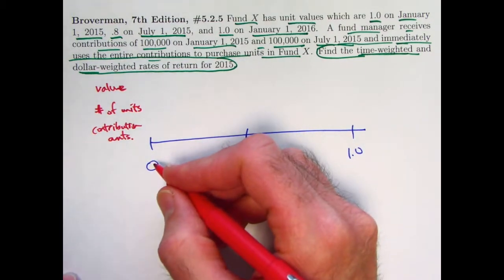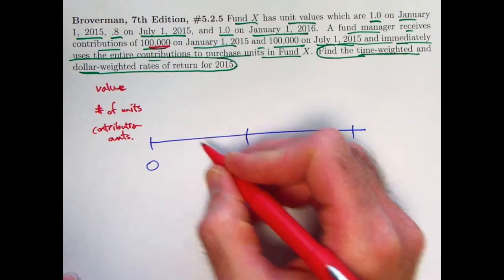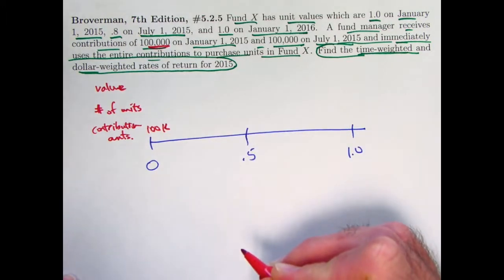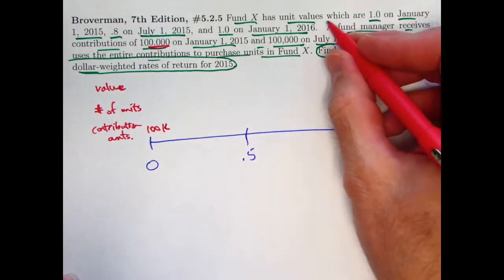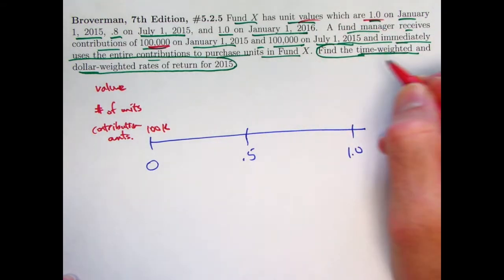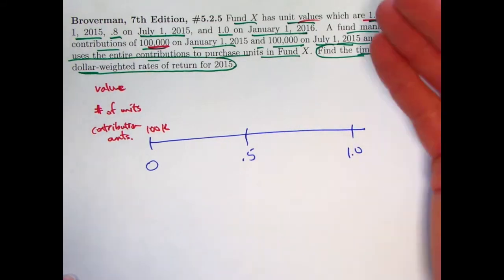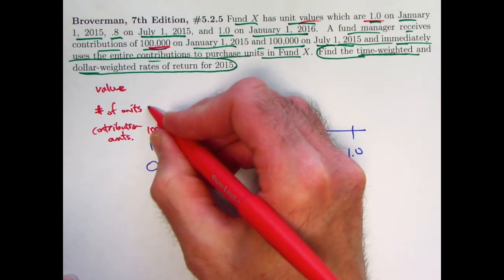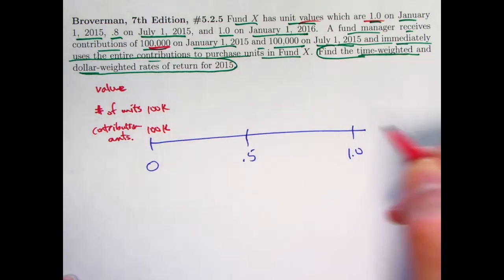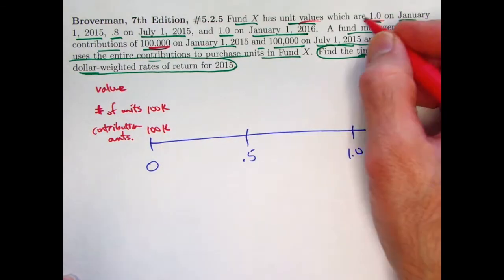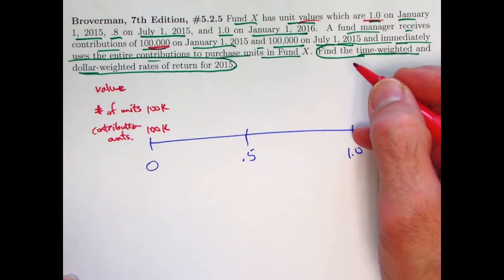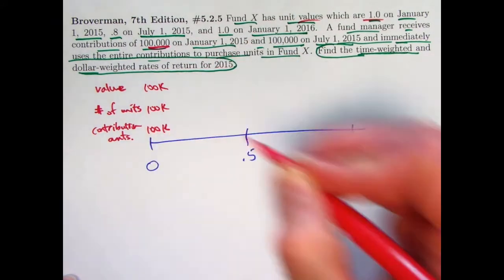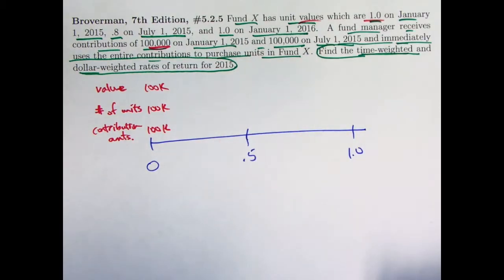So initially at time zero, you have a contribution amount that is $100,000, I'll write it as 100K. Since the unit values are 1.0, that means each unit, each share costs $1. So if you've got 100,000 dollars that you contributed, that means you bought 100,000 units. And the value is 1.0 per unit. That's going to be, since you have 100,000 units, a value also 100,000.